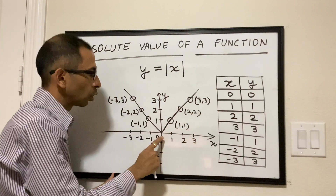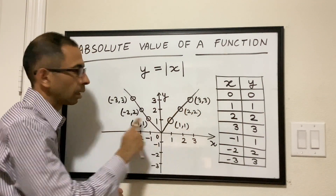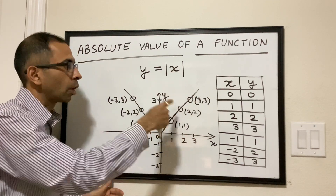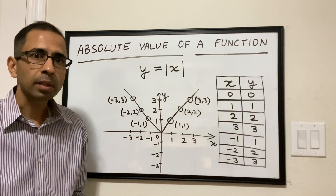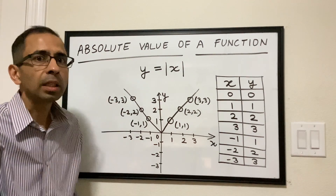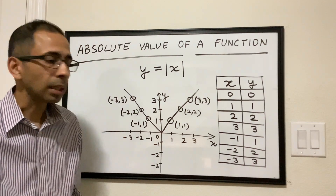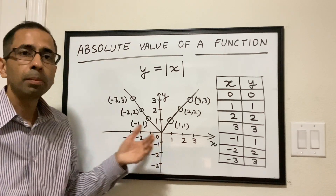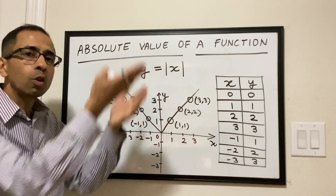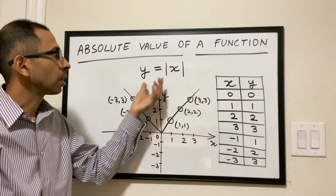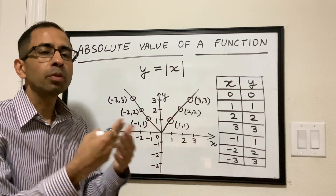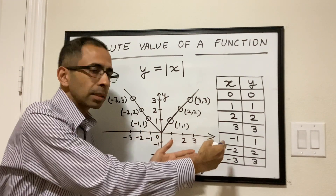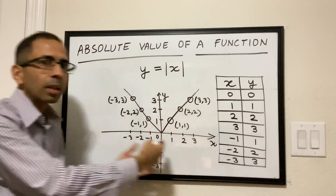So we got these points — (0,0), (1,1), and so on. We join them and we see this is how the graph of the absolute value function looks like, which is essentially a V-shaped graph. The lowest value of y is 0. There will be no situation wherein y will go below 0 because the function removes the negative sign, so y will always be positive no matter whether x is negative or positive.